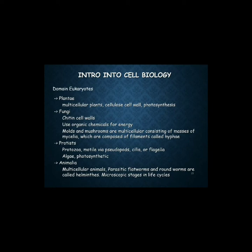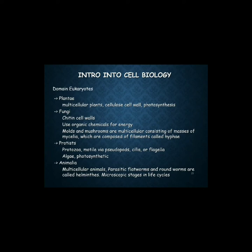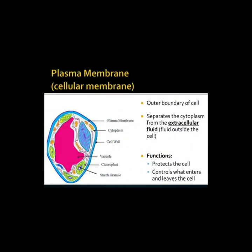In the eukaryotic domain: Plantae are multicellular plants with cellulose cell walls that use photosynthesis. Fungi have chitin cell walls and use organic chemicals for energy — molds and mushrooms are multicellular, consisting of masses of mycelia composed of filaments called hyphae. Protista includes protozoa that move via pseudopods, cilia, or flagella, and algae that are photosynthetic. Animalia includes multicellular animals; parasitic flatworms and roundworms, called helminths, have microscopic life cycle stages you cannot see without a microscope.